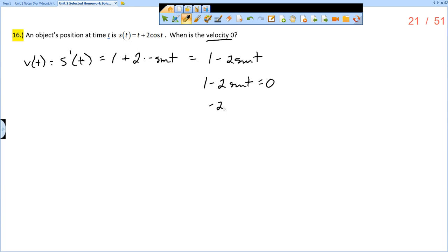I subtract 1, so I have negative 2 sine of t equals negative 1. I divide by negative 2, so I get that sine of t is equal to 1 half.